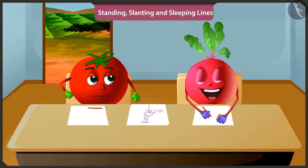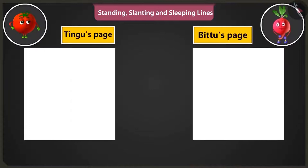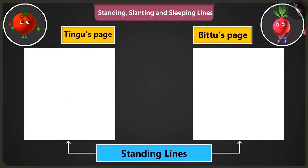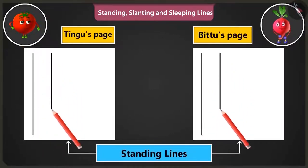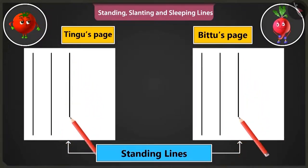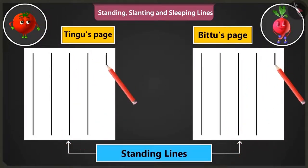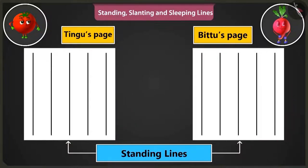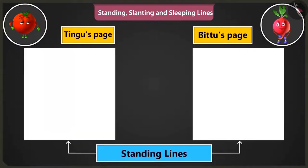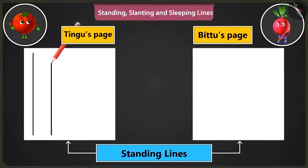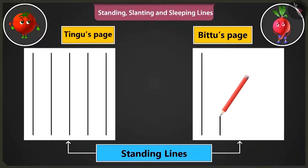Will you teach me? Yes. Look, first of all, let's practice making standing lines from the top to the bottom of the page. By practicing to draw such standing lines, we can make straight lines without even using a scale. Now let us practice drawing standing lines starting from the bottom end of the page and move upwards. Okay, let me do it.